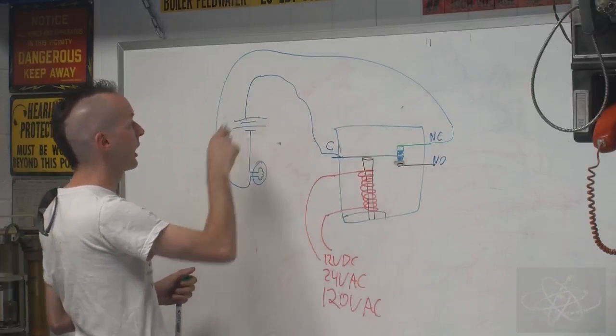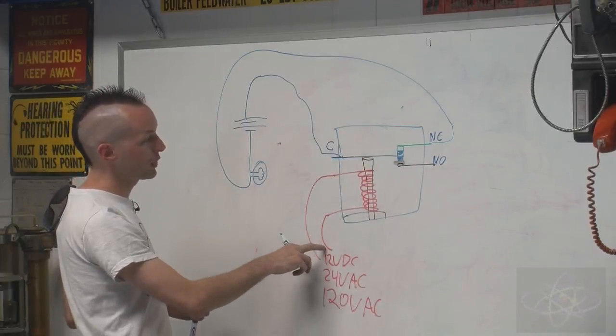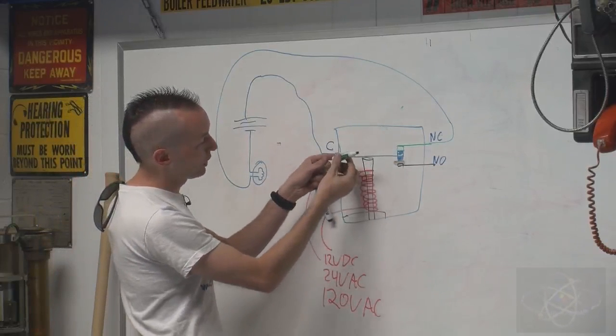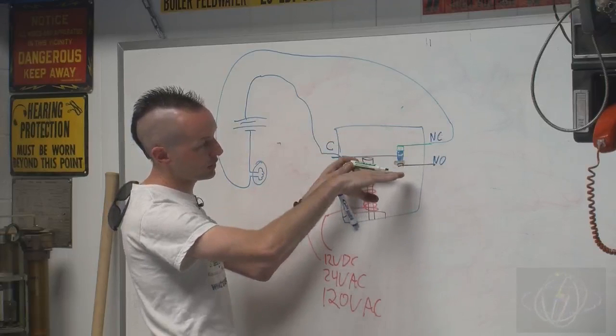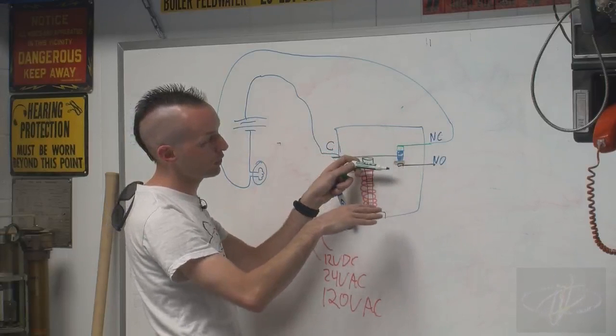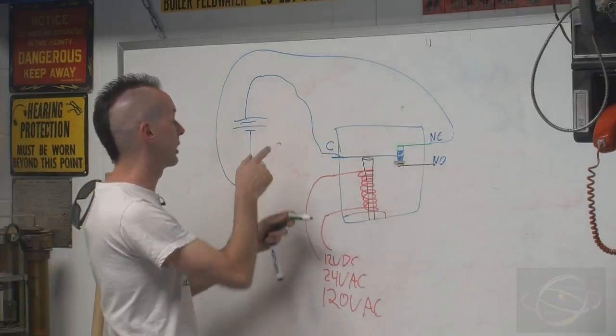So in this instance the light would be on. We apply voltage on here and the magnet pulls the wiper down, so it changes from being connected here to being connected down here. So it goes from the normally closed to the normally open, at which point our light would turn off.